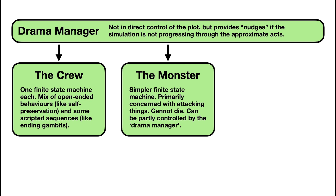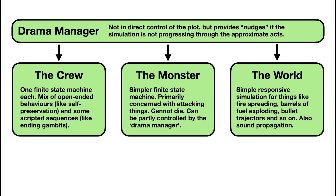The second part of the simulation is the monster — something bad has happened and this creature, which we call the anomaly, is now attacking everyone. It has a much simpler AI since all it needs to do is attack things it sees, but the drama manager can nudge the monster in particular directions. If the crew are too effective at saving themselves, the drama manager will send the monster toward them. Finally, there's the world simulation — basic cause-and-effect stuff like fire spreading each simulation tick. If a bullet is fired, we model where it goes and whether it sets fire to things. There are also extremely rare events where someone can accidentally shoot another crew member if they miss while shooting the monster.